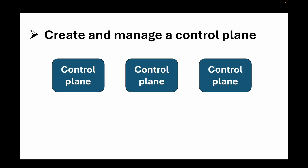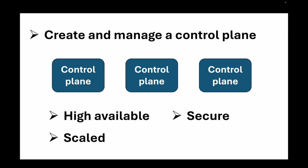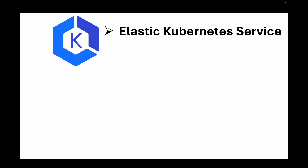You will need to set up machines running the control plane components and ensure they are highly available, secure, scaled, and patched when new updates are available. Managing the control plane can become quite a complex task. For that very reason, AWS launched Elastic Kubernetes Service, also known as EKS.